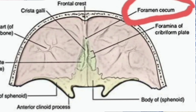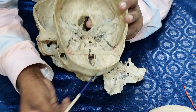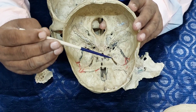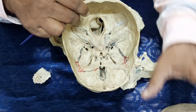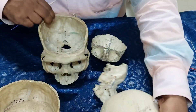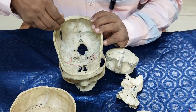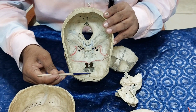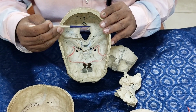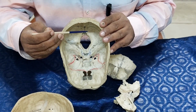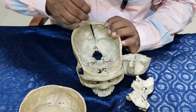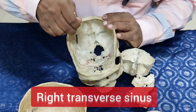The superior sagittal sinus starts from the internal frontal crest, in front of the foramen cecum, then passes posteriorly on each side of the sagittal suture on the sagittal sulcus on the interior of the vault of the skull — on the parietal bone — and ultimately, in the occipital bone, it ends at the internal occipital protuberance and then deviates to the right side as the right transverse sinus.